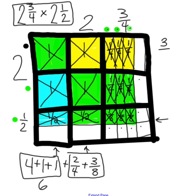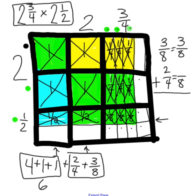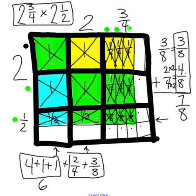Finding equivalent fractions with eight as the denominator: three-eighths stays as three-eighths. Four times two equals eight, so the denominator four is multiplied by two. Whatever is done to the denominator must also be done to the numerator: two times two equals four. The problem becomes three-eighths plus four-eighths. Three plus four is seven, and the denominator stays the same — seven-eighths. Adding six wholes plus seven-eighths gives a final answer of six and seven-eighths.